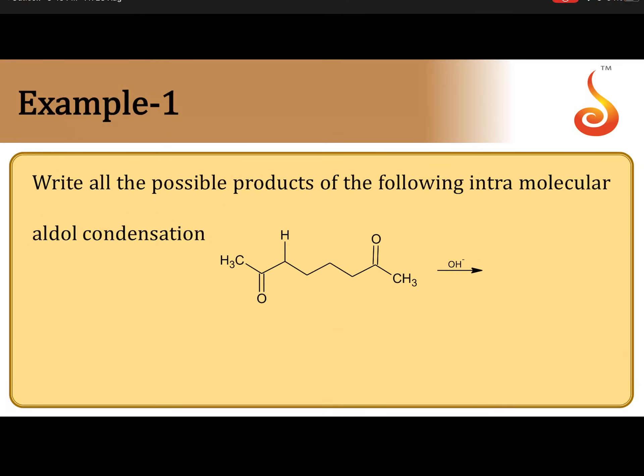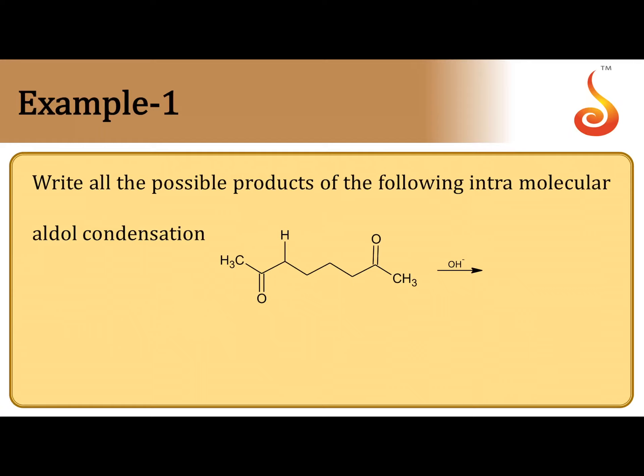Write all the possible products of the following intramolecular aldol condensation. How to write the possible intramolecular aldol condensation products? First you identify alpha hydrogen, recognize the alpha hydrogen. This is alpha carbon, this is also alpha carbon. This molecule has symmetry, that is why first you identify one of the two alpha hydrogens.